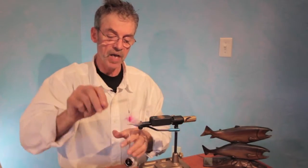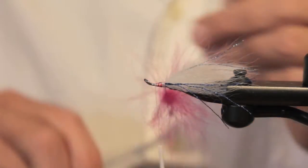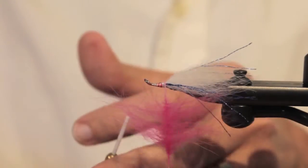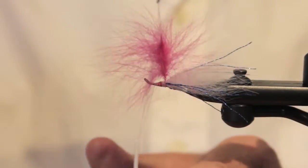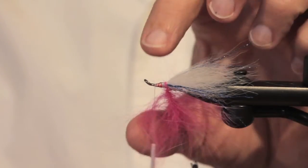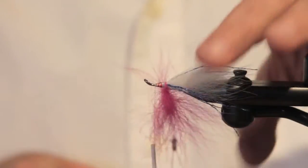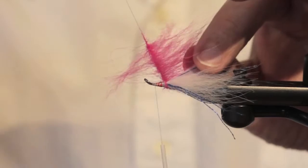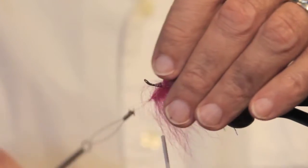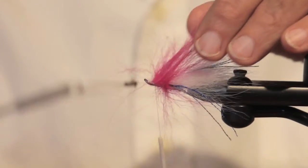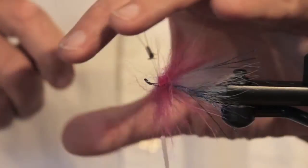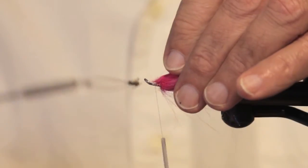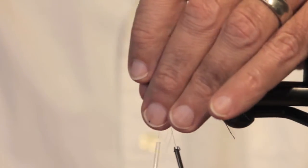So arctic fox in a dubbing loop. This is basically doing with arctic fox what has already been done for you with the EP Foxy brush. Except this has a thread core. You can cut this with your scissors. The Foxy brush has a stainless steel core. And by the way I used an inch and a half Foxy brush.